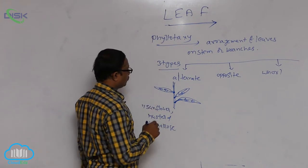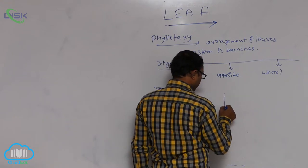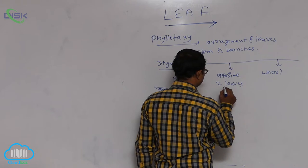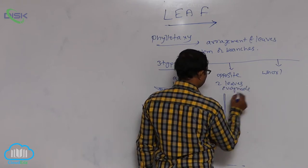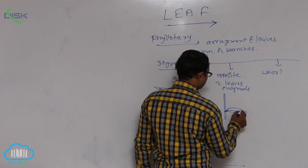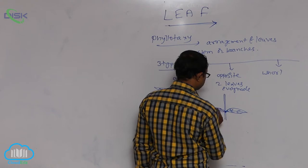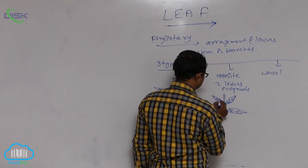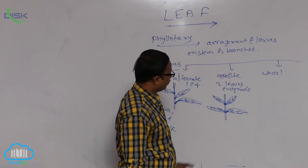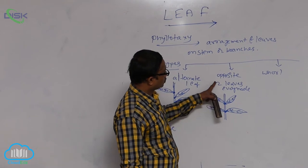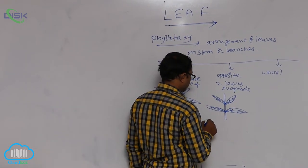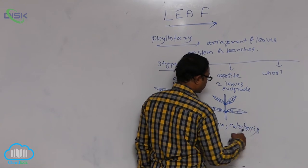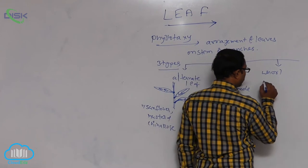In opposite phyllotaxy, at every node two leaves are formed oppositely. This type is known as opposite phyllotaxy. Examples include guava plant and Calotropis — both are examples of opposite phyllotaxy.